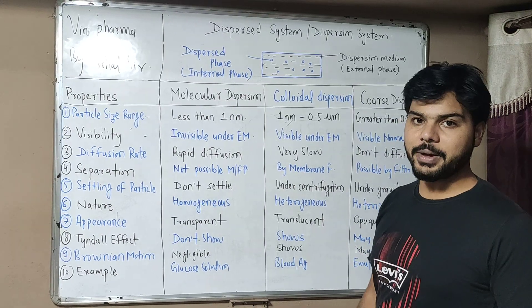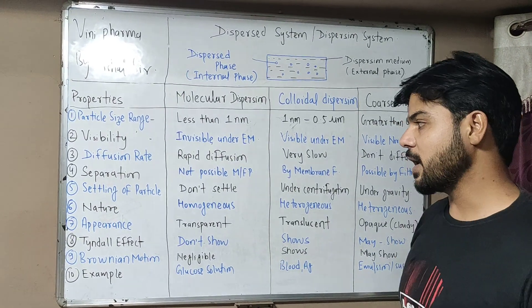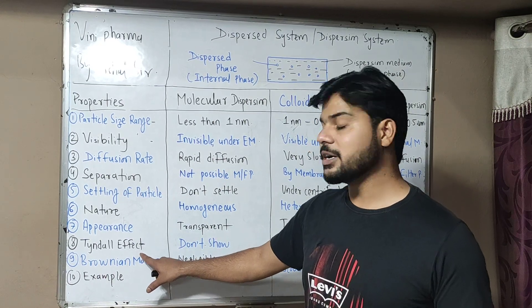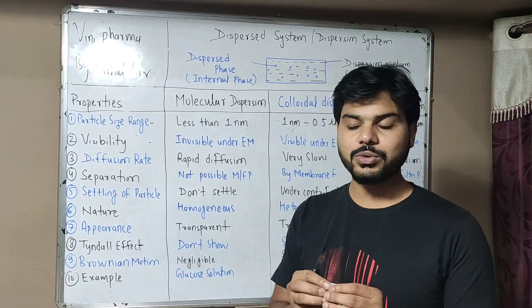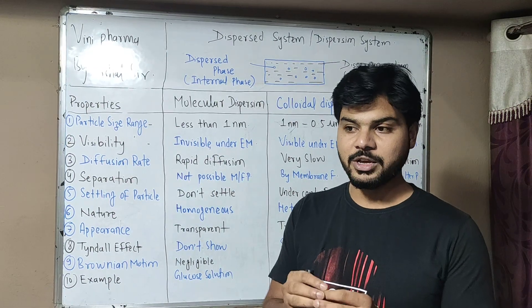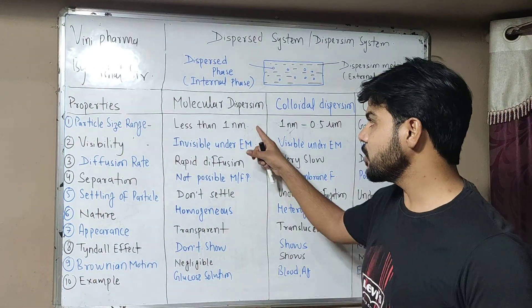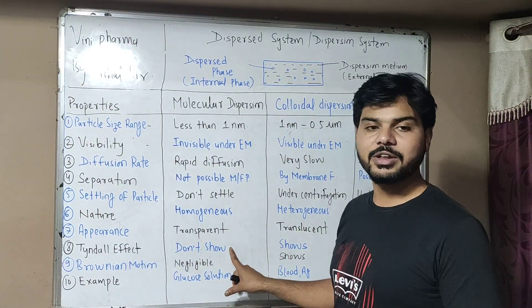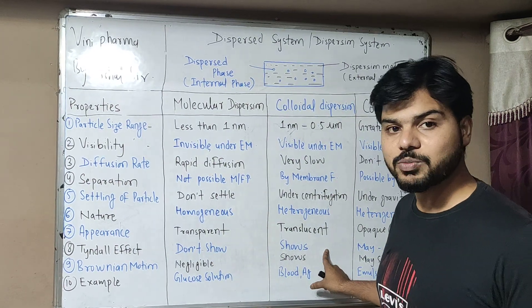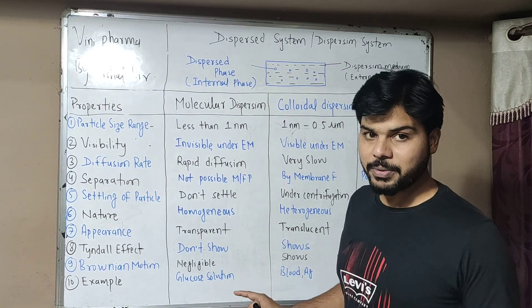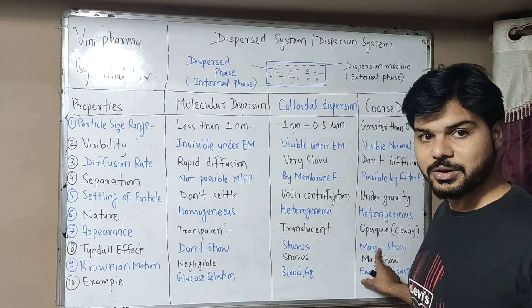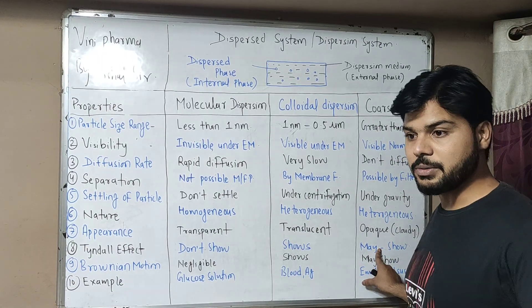Coarse dispersion is opaque — white and cloudy. Now we will talk about the Tyndall effect. When light passes through, it scatters in all directions. Molecular dispersion does not show the Tyndall effect. Colloidal dispersion shows the Tyndall effect as one of its core properties. Coarse dispersion also shows the Tyndall effect.